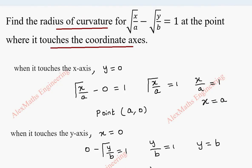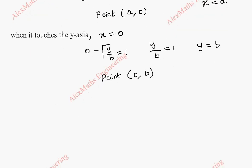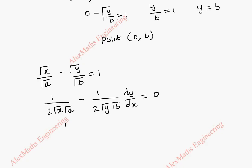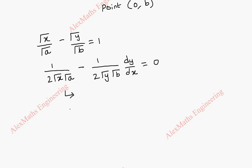Now we are going to find the radius of curvature at these points. We take the curve equation and rewrite it before differentiation: root x by root a minus root y by root b equal to 1. When we differentiate, the differentiation of root x is 1 by 2 root x, and root a is kept as it is. Similarly, 1 by 2 root y with root b kept as it is, into dy by dx equal to 0.